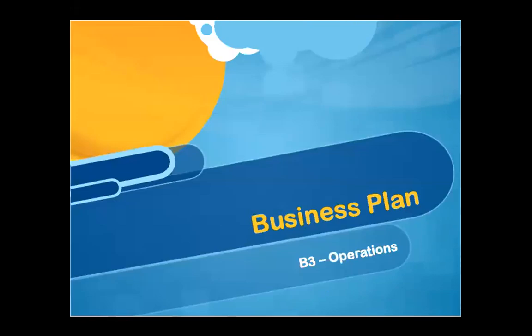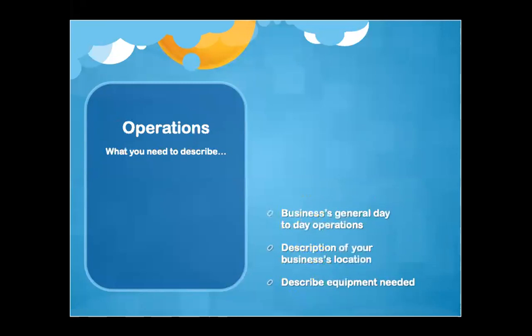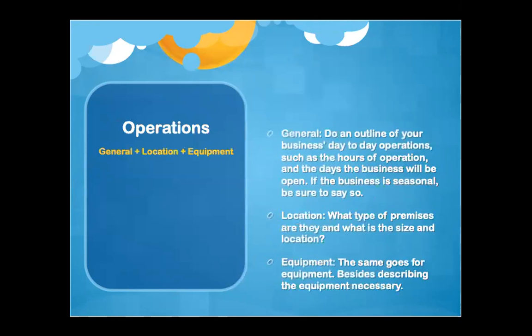The operations section describes the business's general day-to-day operations, the description of your business's location — whether a single location or franchise — and the equipment needed. For example, if you're an agency, you'd describe the software, technology, hardware, and other tools needed to support your business.